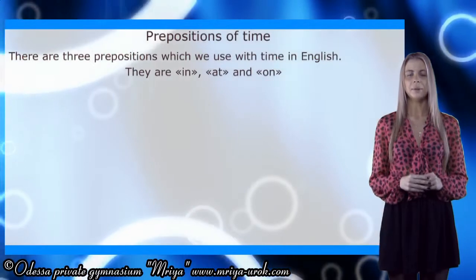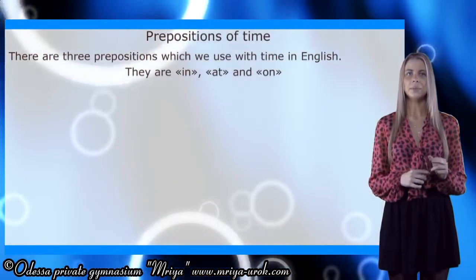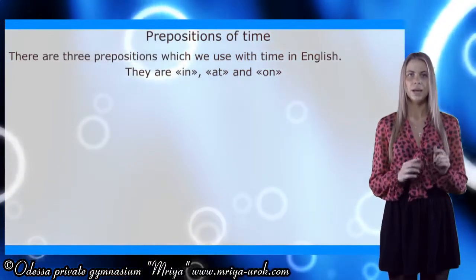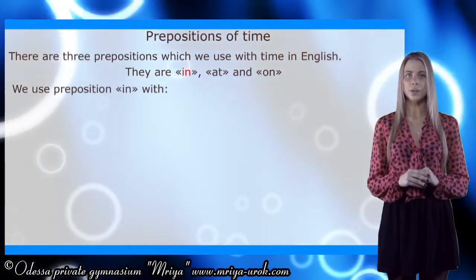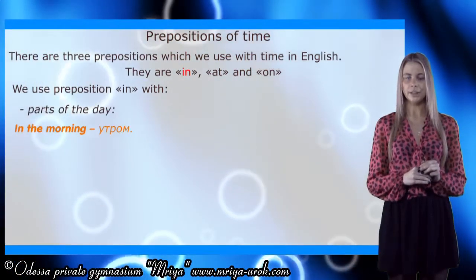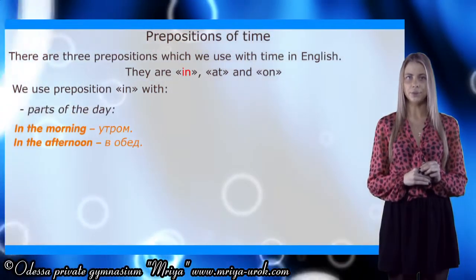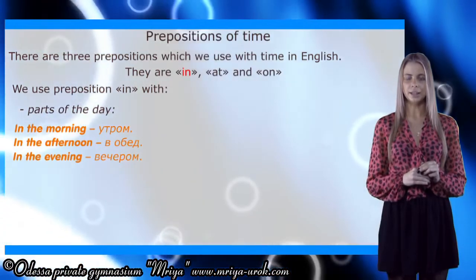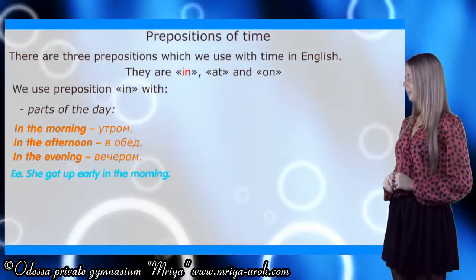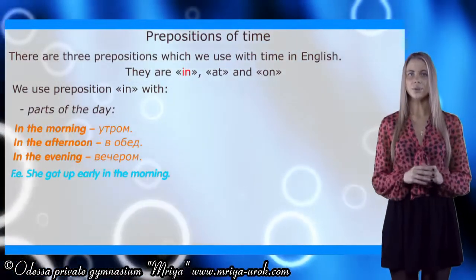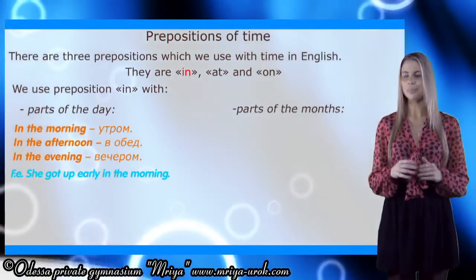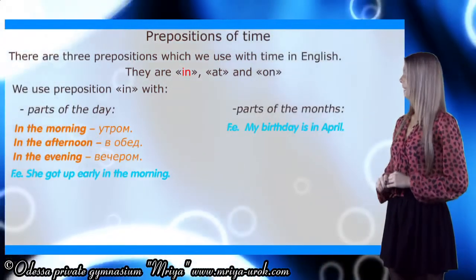They are preposition 'in', preposition 'at', and preposition 'on'. We use preposition 'in' with parts of the day – in the morning, in the afternoon, and in the evening. For example, she got up early in the morning. We also use preposition 'in' with months. For example, my birthday is in April.